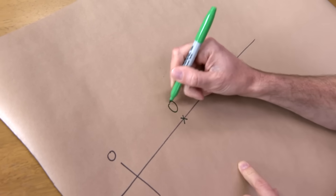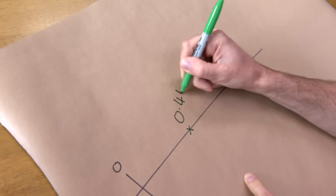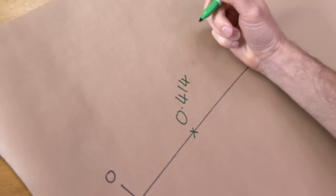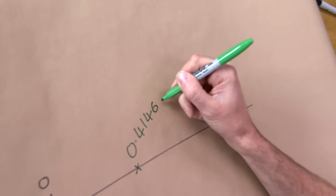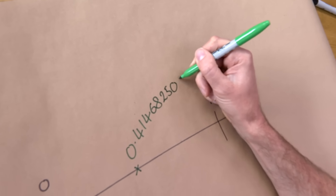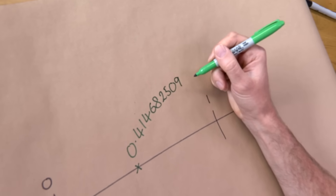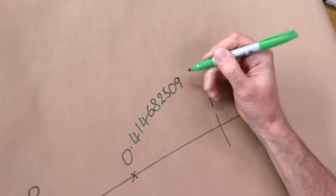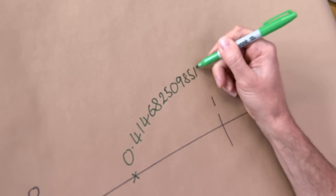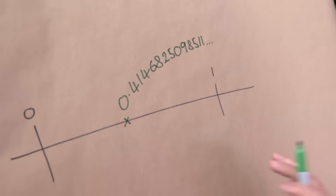That is the point 0.4146825098511, and it keeps going. There you go. All the primes.